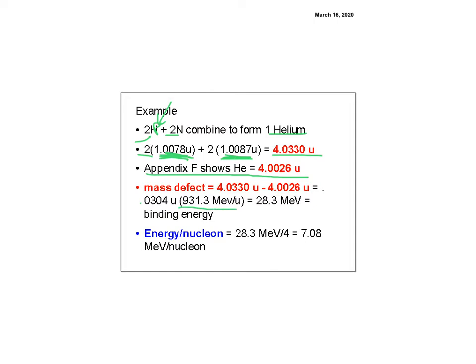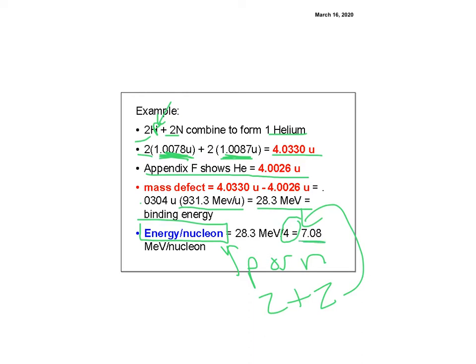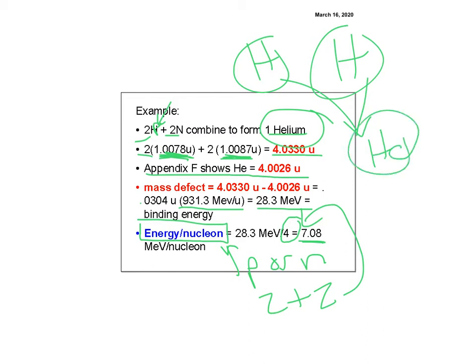Multiplying the mass defect of 0.0304 u by the conversion factor 931.5 MeV per u gives 28.3 mega-electron-volts of binding energy. We can also express this as energy per nucleon. Helium has four nucleons, so 28.3 divided by 4 equals 7.08 MeV per nucleon. This is what's happening in the sun — it fuses hydrogen into helium and releases this energy for every nucleus formed.